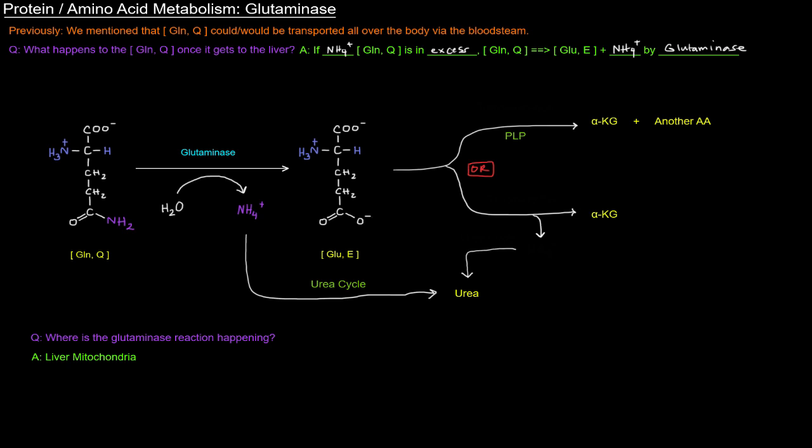Now, the glutamate still has a nitrogen on it. That glutamate can undergo a transamination reaction in the liver mitochondria to give alpha-ketoglutarate and some other amino acid, and pyridoxal phosphate would be required for that. Or it can be oxidatively deaminated by glutamate dehydrogenase to give alpha-ketoglutarate and a free ammonium ion. And that ammonium ion can also go to the urea cycle to produce urea so that we can get rid of that excess ammonium ion.